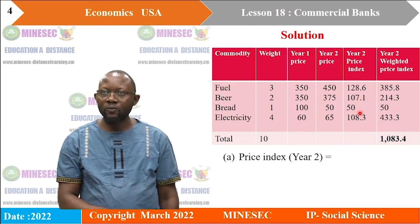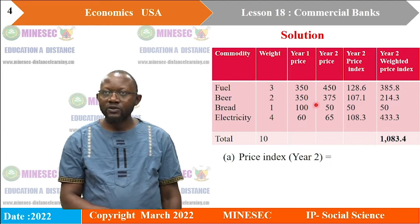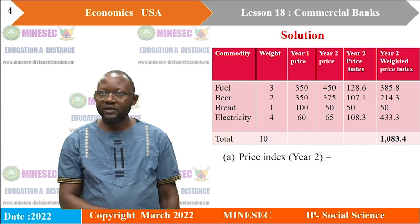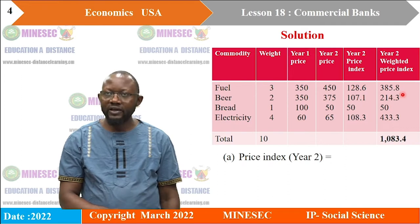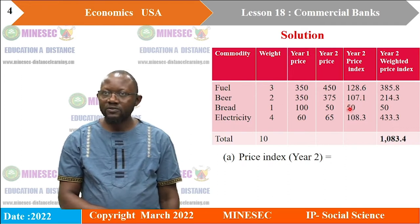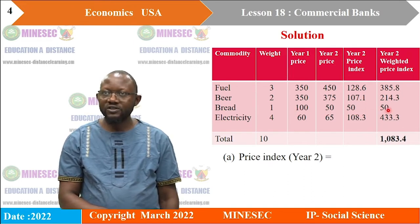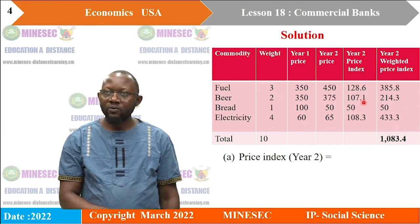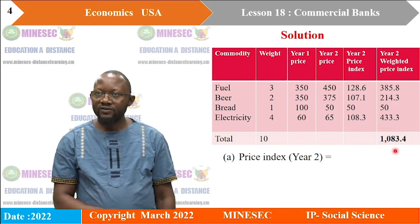Now, we take the price indices for year 2 and multiply by the weight, which represents the importance of each commodity, to get the weighted price index. Fuel: 128.6 × 3 = 385.8. Beer: 107.1 × 2 = 214.3. Bread: 50 × 1 = 50. Electricity: 108.3 × 4 = 433.2. Adding all weighted price indices gives us 1083.4.